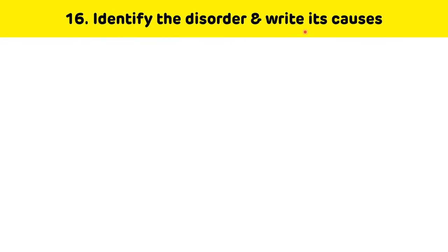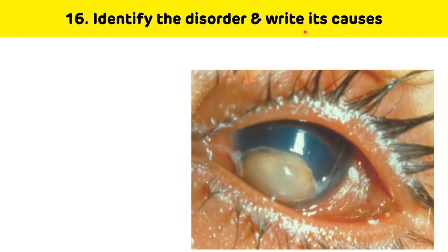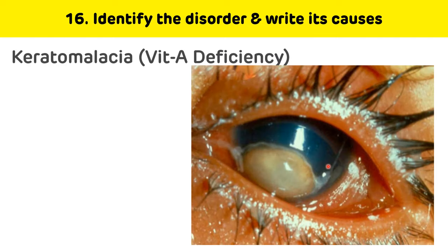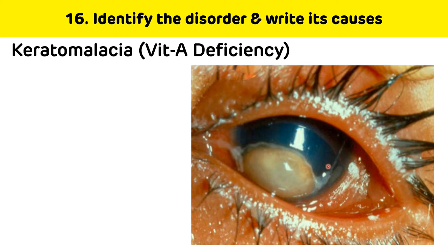Identify the disorder and write its causes. This is also associated with vitamin A deficiency and is keratomalacia. If xerophthalmia persists for a long duration, it converts to keratomalacia, in which the cornea is degenerated.